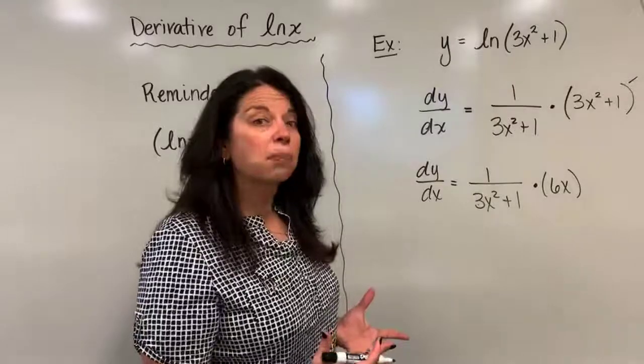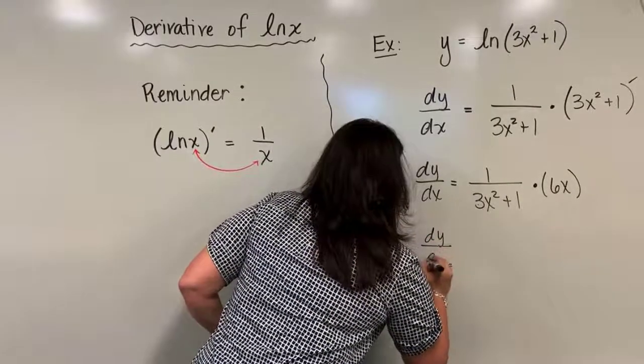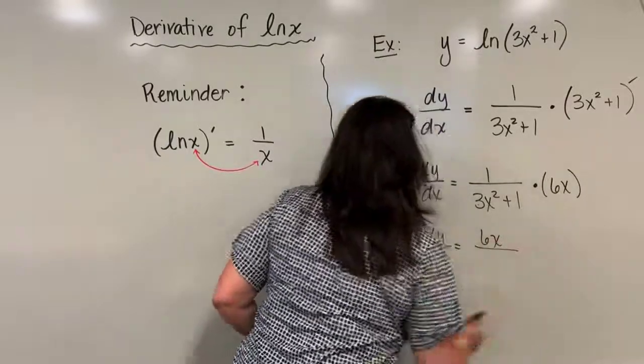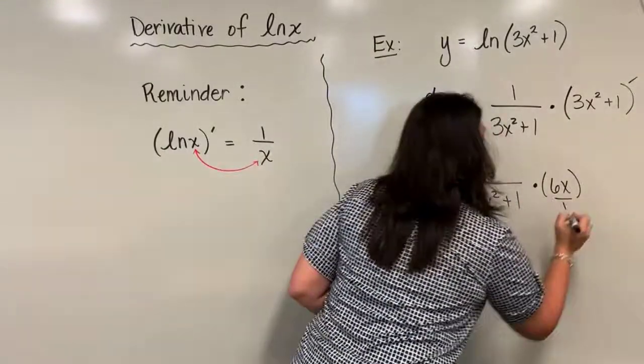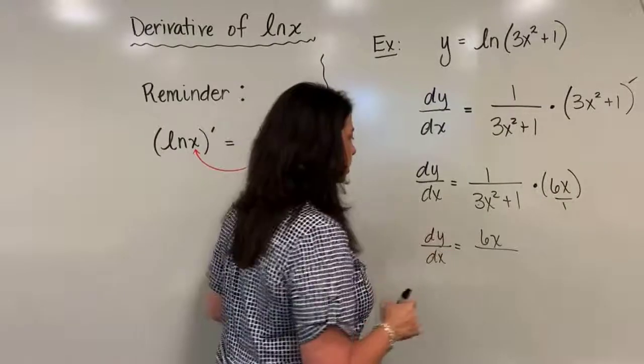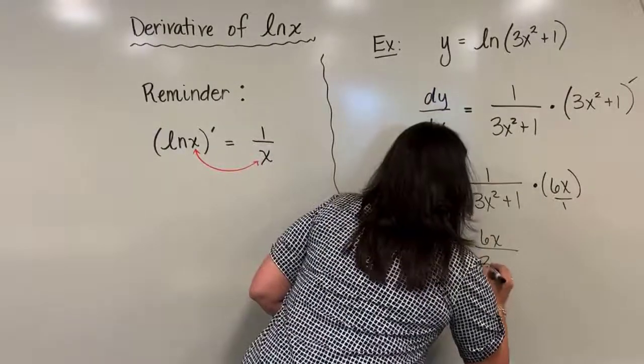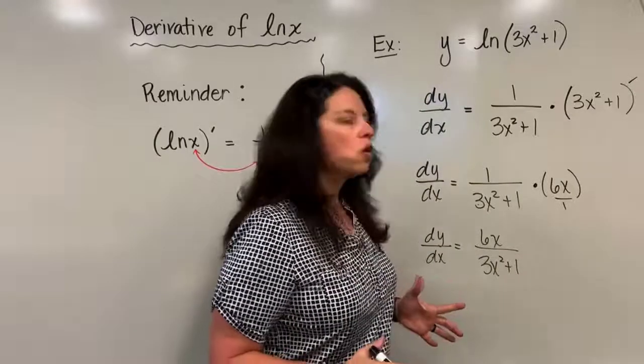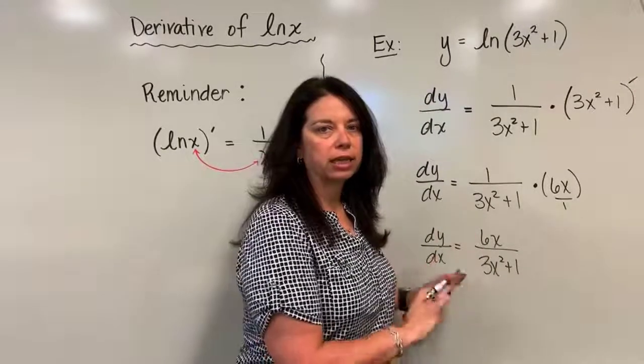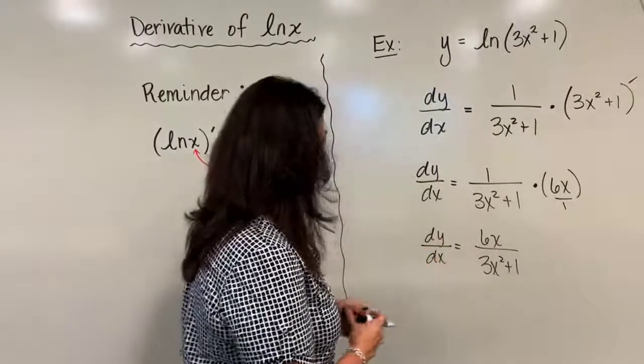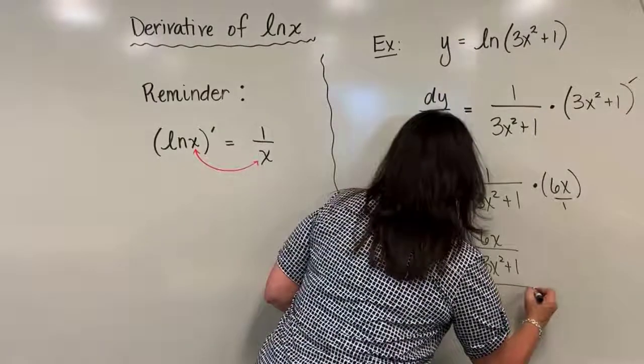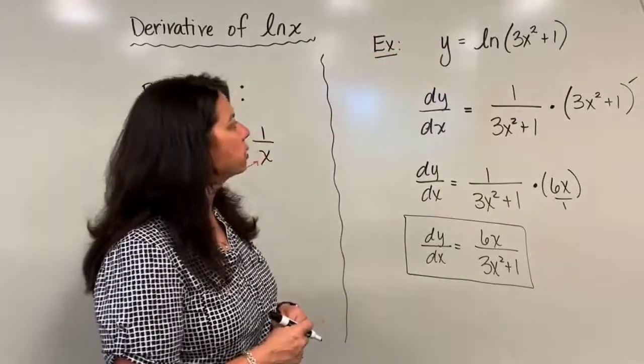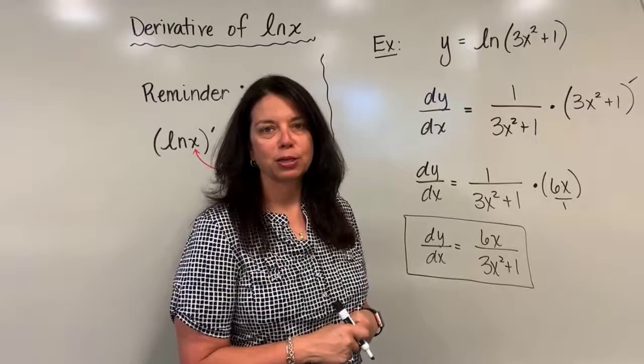And then to clean it up and simplify, you can now write this as dy/dx is equal to 6x goes in the numerator—because technically that's over 1 over here as a reminder—so 6x in the numerator, denominator 3x squared plus 1. Unfortunately there's no way we can actually simplify this expression any further; it's just going to have to stay like this. So now this is my derivative of this function here, y equals natural log of 3x squared plus 1.